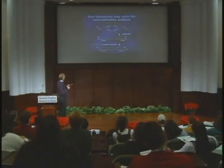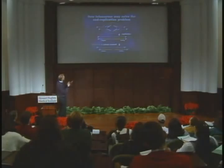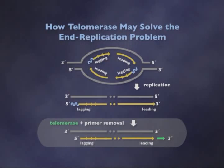So how does this telomerase solve the end replication problem? The problem was that we have a blunt end chromosome. If telomerase can now simply extend this back out to give the single-stranded overhang...